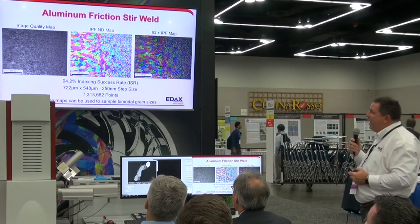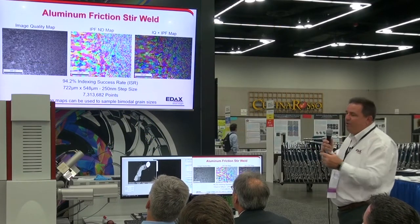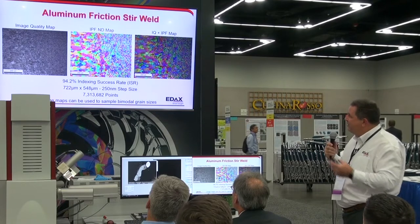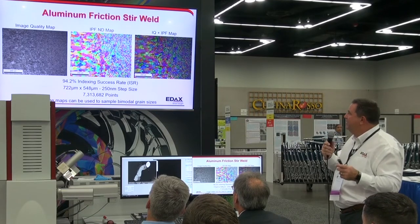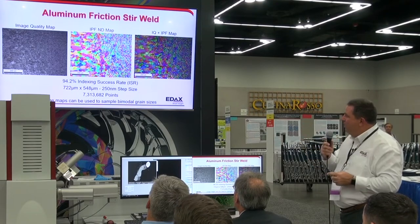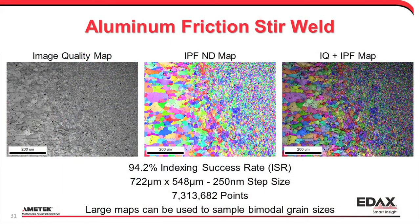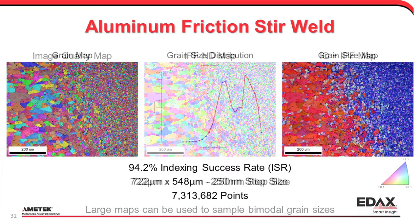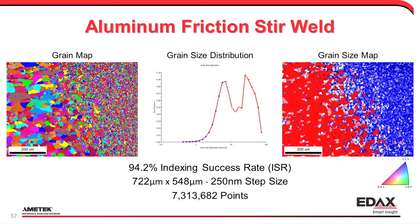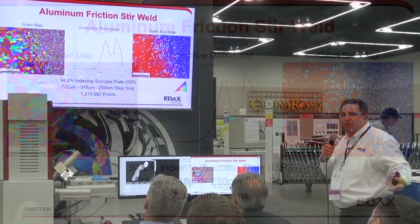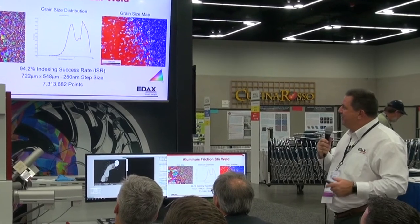We can also handle a sample with a bimodal grain size — very small and very large grains. To measure that grain size, our step size must be small enough to resolve the small grains. Measuring a weld interface at about 7 million data points, we can resolve both small and large grains across the interface and get grain size distributions for both. The red grains correspond to base metal, the blue grains to the weld nugget, helping understand weld parameters and resulting microstructure.